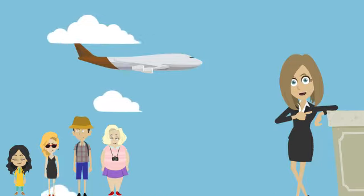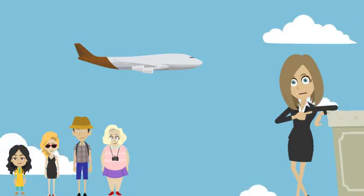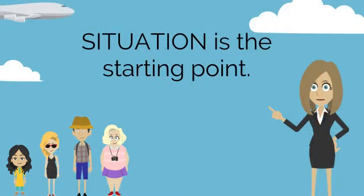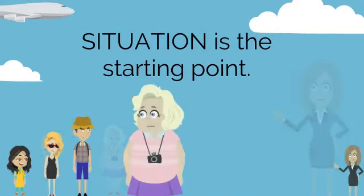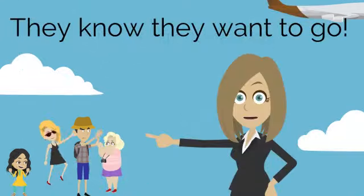S — the Situation is your starting point. It is a neutral description of the current state with facts you know your audience will agree on. In our European example, the situation is: we have been talking about seeing Europe together for the last five years, none of us is getting any younger, and I finally have the means to invest in a vacation — so this year is the year. This is a neutral description stating facts or information already well known by the audience.